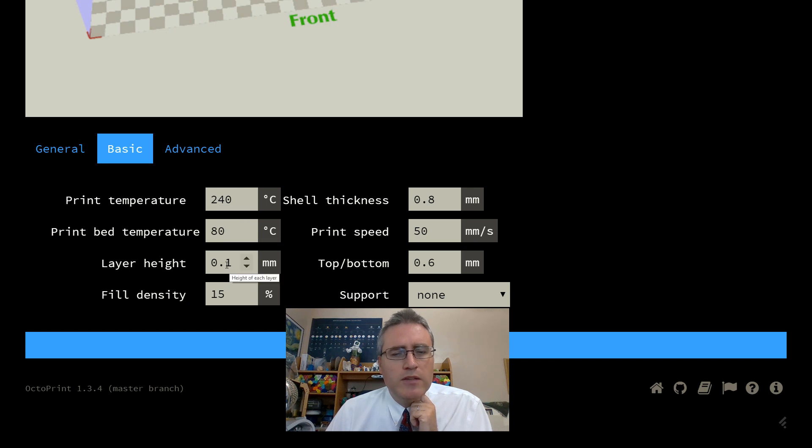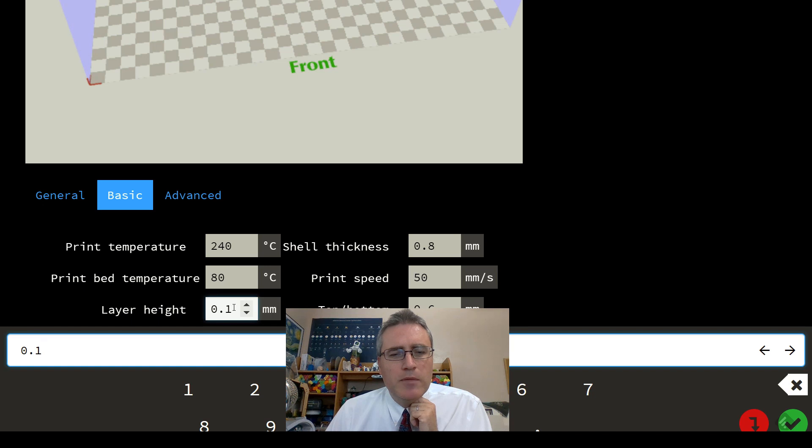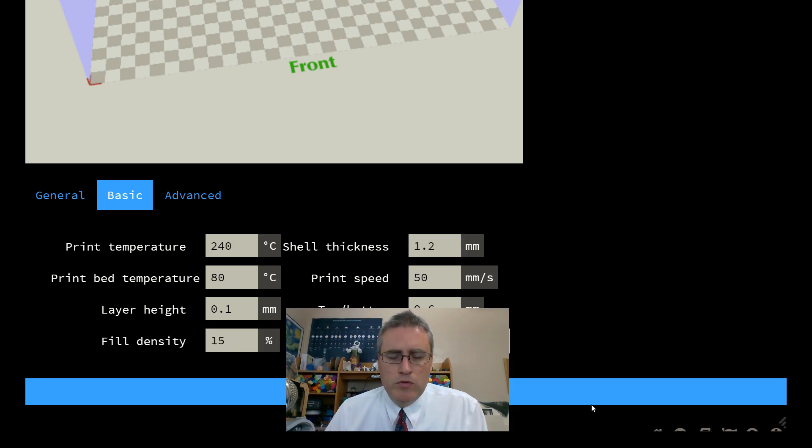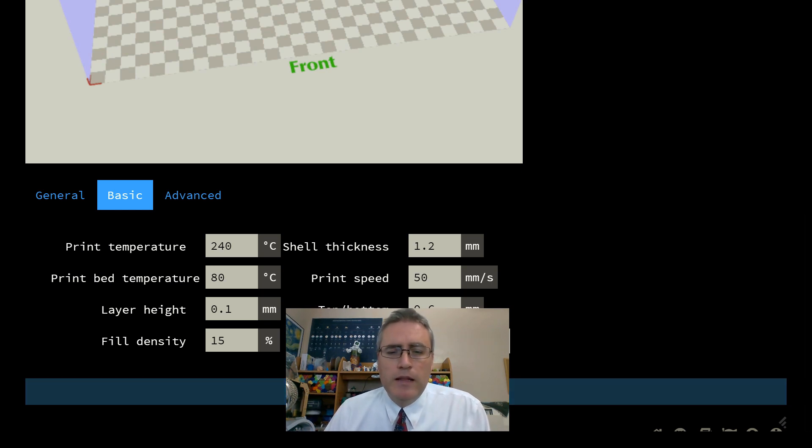Let's see. Make sure that the settings are the way that I want them. Temperature's good. Layer height. Do I want to do 0.1? Yeah, that'll make it look good. Maybe I'll take that up to 0.15. Top, bottom, print speed. I want the shells to be a little bit thicker. I want that to be 1.2. I want to have three shells on there. Now let's slice it up.